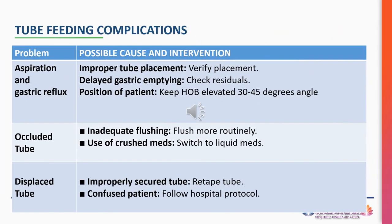Aspiration and gastric reflux: causes include improper tube placement (verify placement), delayed gastric emptying (check residuals), and position of patient (keep elevated at 30–45 degrees). Occluded tube: causes include inadequate flushing (flush more routinely) and use of crushed medications (switch to liquid meds). Displaced tube: causes include improperly secured tube (re-tape tube) and confused patient (follow hospital protocol).